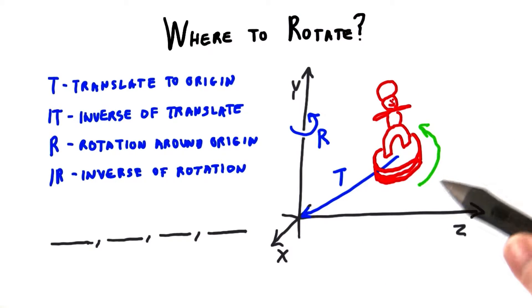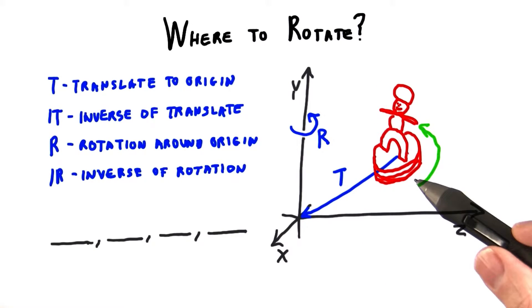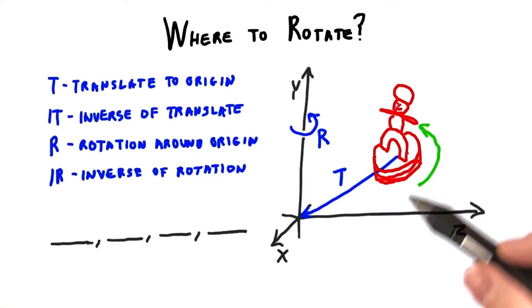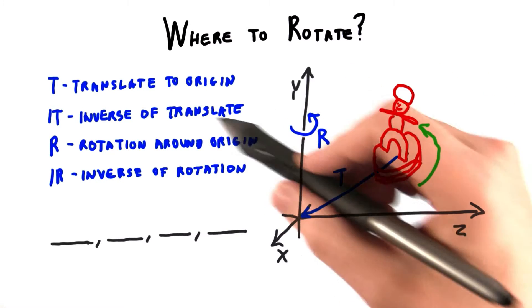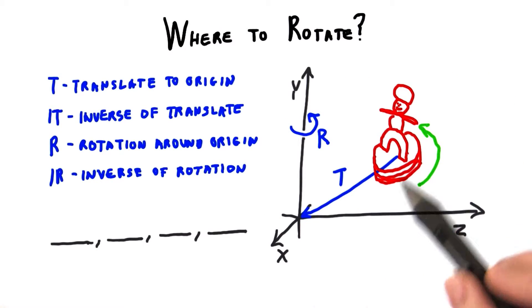You'd like to rotate it in place on its base so that it's facing like this. You know that if you just try to rotate it, it's going to rotate around the origin and it'll swing wildly in position. You want it to stay where it is.